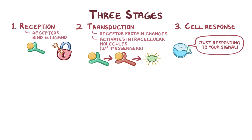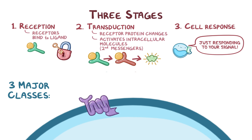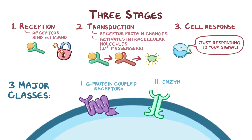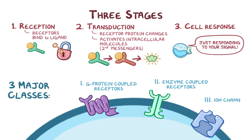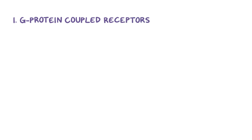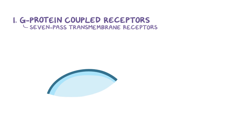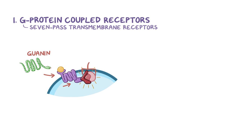Zooming into these transmembrane receptors, there are three major classes: G-protein-coupled receptors, enzyme-coupled receptors, and ion-channel receptors. G-protein-coupled receptors are 7-pass transmembrane receptors — long proteins with one end outside the cell that binds the ligand, then the snake-like protein dips in and out of the cell membrane 7 times, finally ending on the inside of the cell. The intracellular end activates proteins called guanine nucleotide binding proteins, or G-proteins.